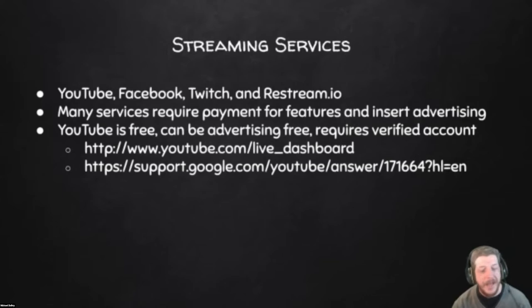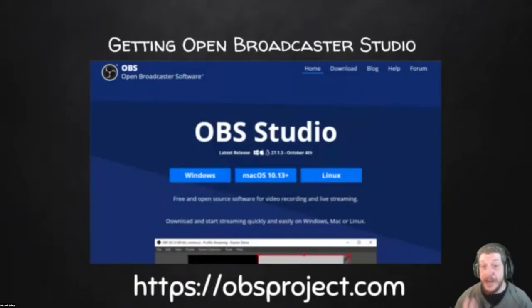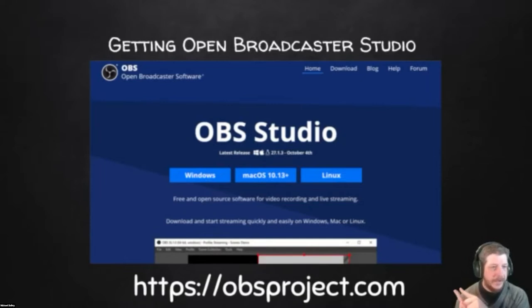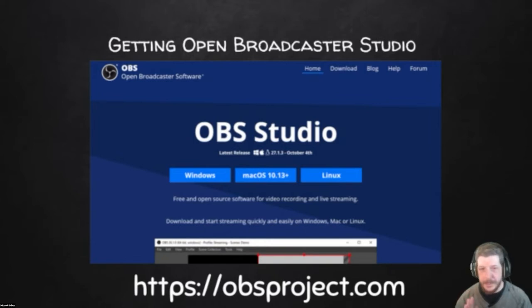We can finally move on to Open Broadcaster itself. If you haven't yet downloaded it, you get it at obsproject.com. It looks just like the picture there — you have big download buttons for Windows, Mac, and Linux right there. It's a signed binary installer, so you just download it, install it, and it will be there for you.